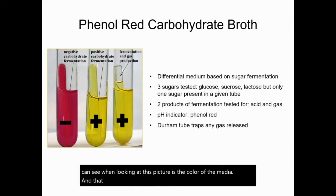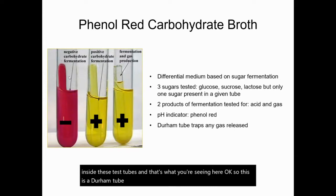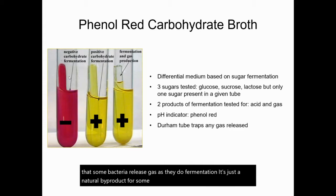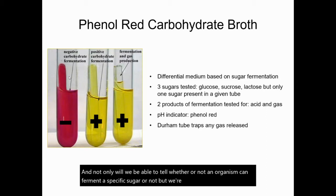There's also a Durham tube inside these test tubes, and that's what you're seeing here. This is a Durham tube, and what it does is it catches gas. It turns out that some bacteria release gas as they do fermentation — it's just a natural byproduct for some organisms, not all organisms, but some of them. So this Durham tube provides us an extra piece of information: not only will we be able to tell whether or not an organism can ferment a specific sugar, but we're able to tell whether or not it produces gas as a byproduct of fermentation.